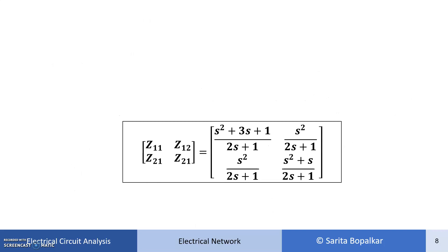The Z parameters can be written in matrix form. In the previous video we solved an example with only resistances; here we included resistors and inductors. When the circuit is only resistive, you simply apply KVL and rearrange terms. When energy-storing elements like inductors or capacitors are present, you first convert the circuit to the transform domain — the S domain — by taking the Laplace transform.